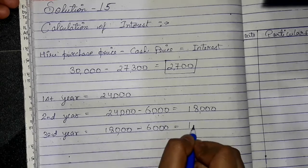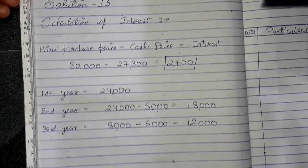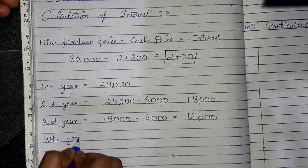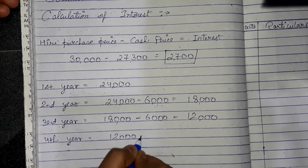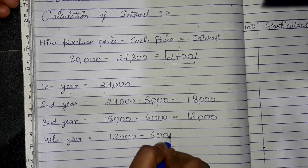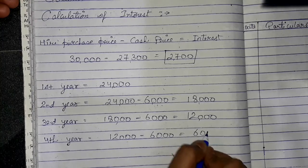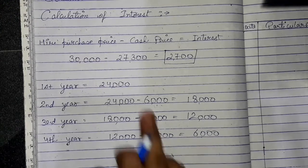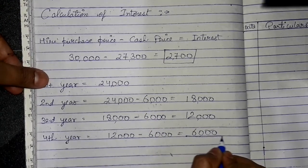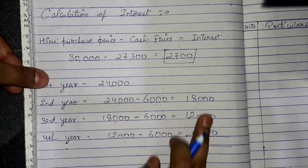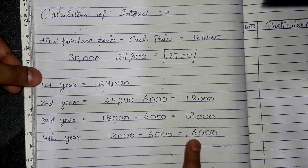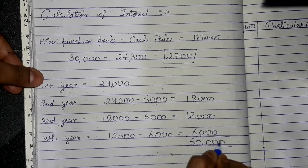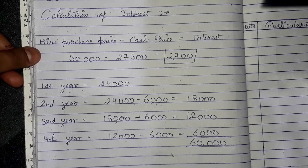In the third year it gives 12,000, and then in the fourth year we have 12,000 minus 6,000, leaving 6,000 as our last year's total pay. We will add the total money: 24,000 + 18,000 + 12,000 + 6,000. This is our total money distributed across each year.